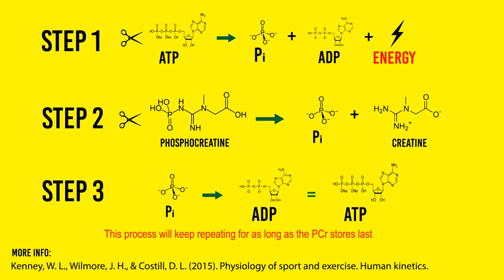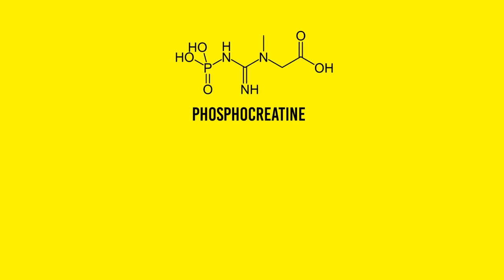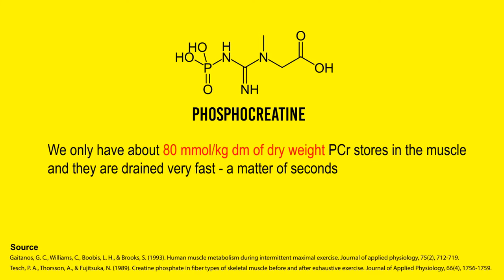Phosphocreatine stores are very limited — only about 15 seconds' worth. Generally, it's about 80 millimoles per kilogram per decimeter of dry weight, which is not a lot. It will only provide enough max effort activity for about 10 to 15 seconds. They drain very fast and take quite a while to recover. This system is not activated unless the intensity of the work is extremely high — it's like your fastest backup system.